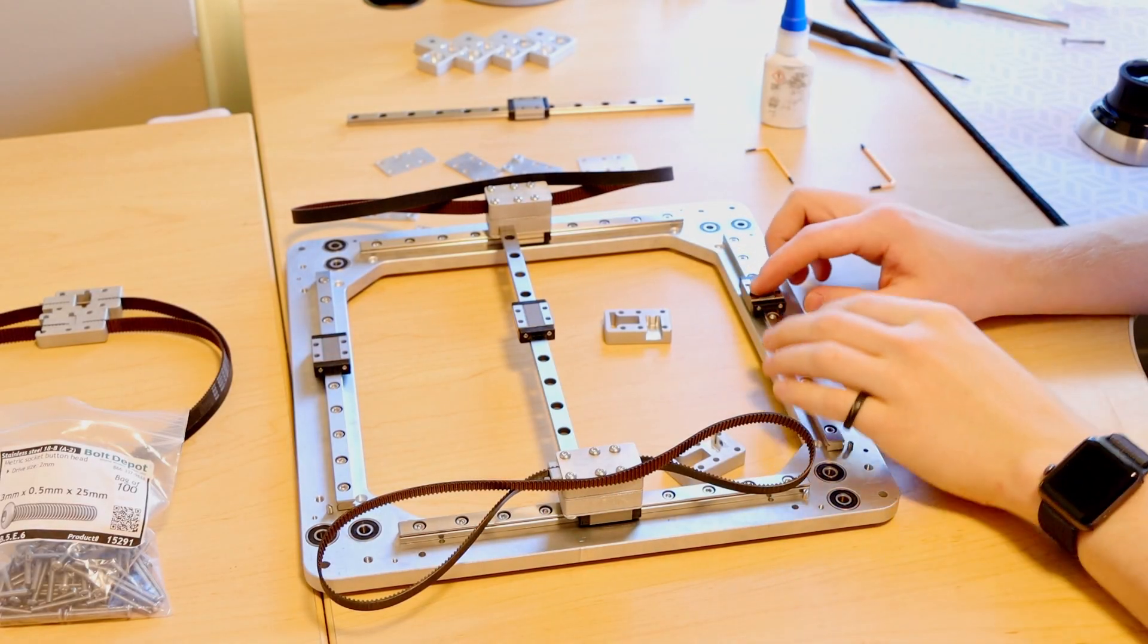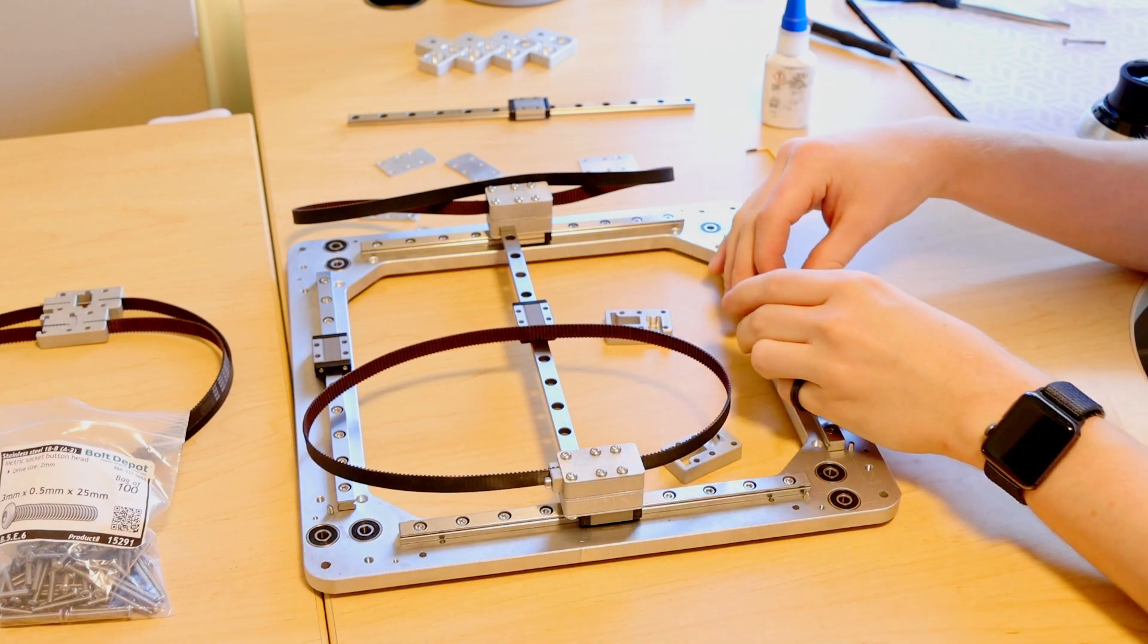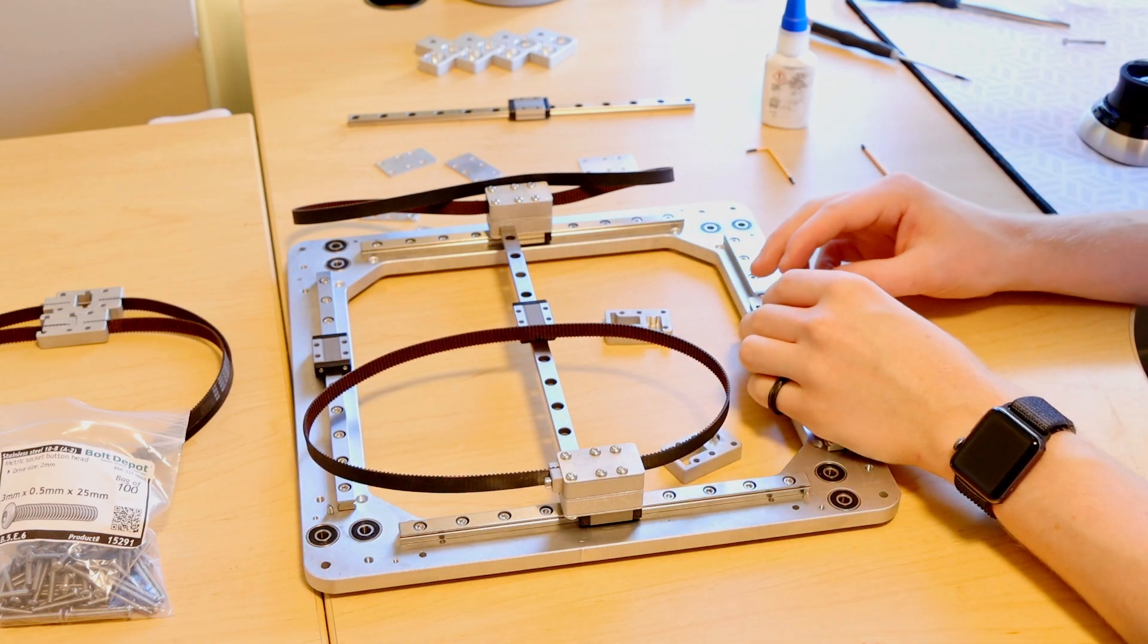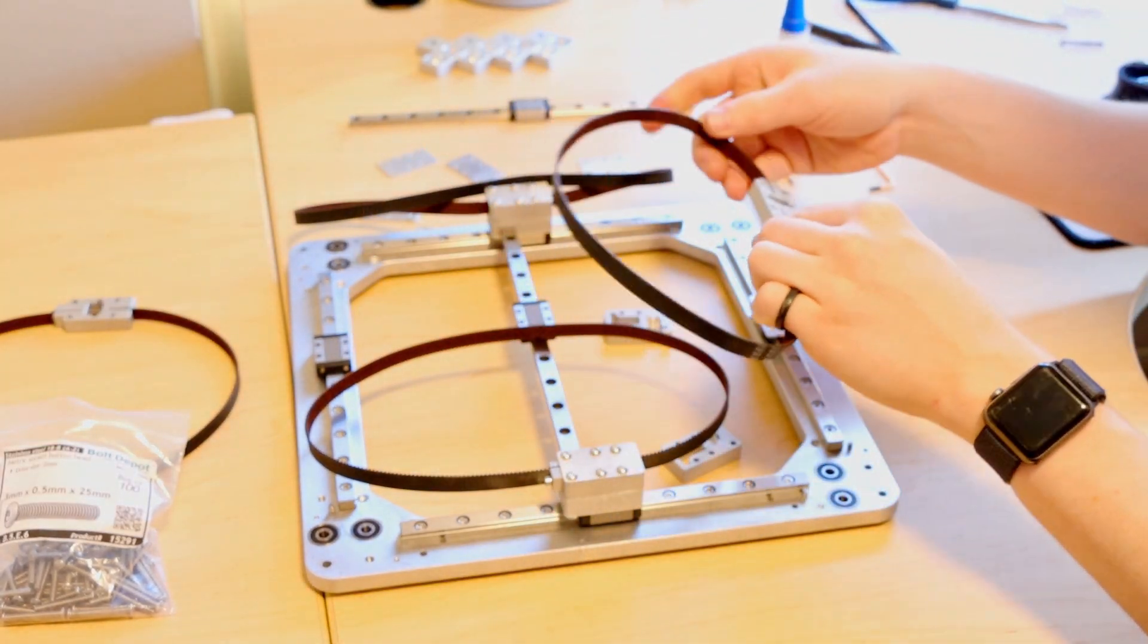These towers are built up in a slightly different order and so we're going to start with the same base plate that has the PEM inserts. And then in this case the belt tensioner assembly is the first thing that goes on.